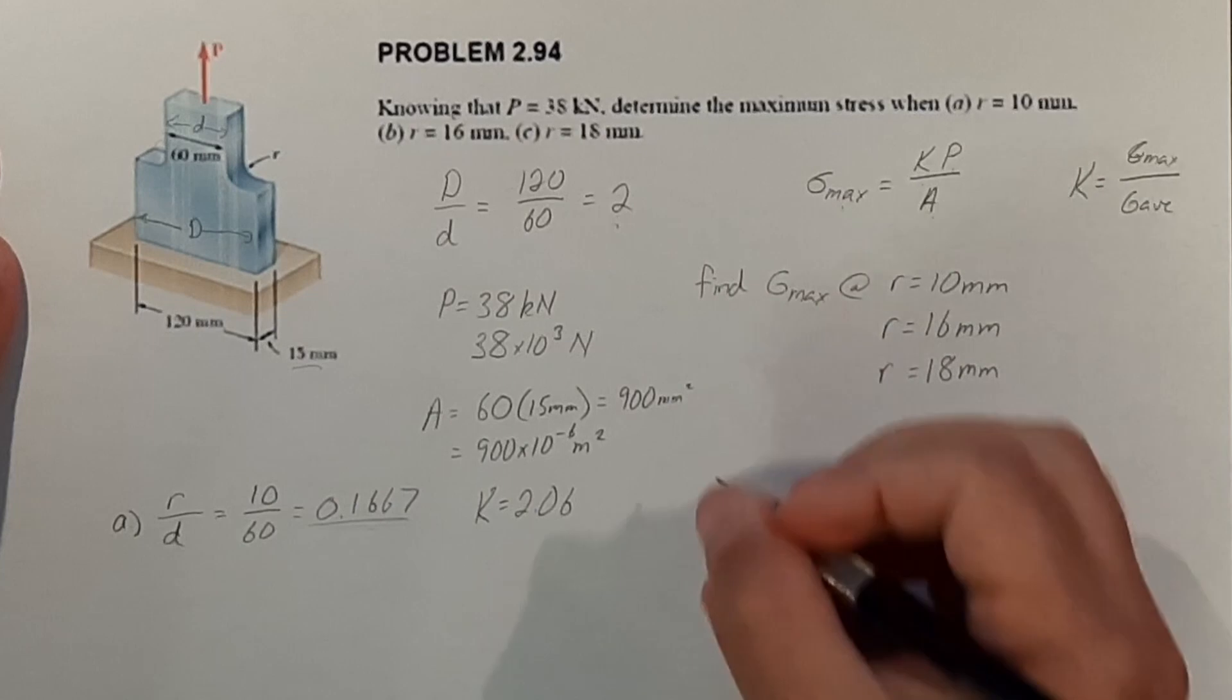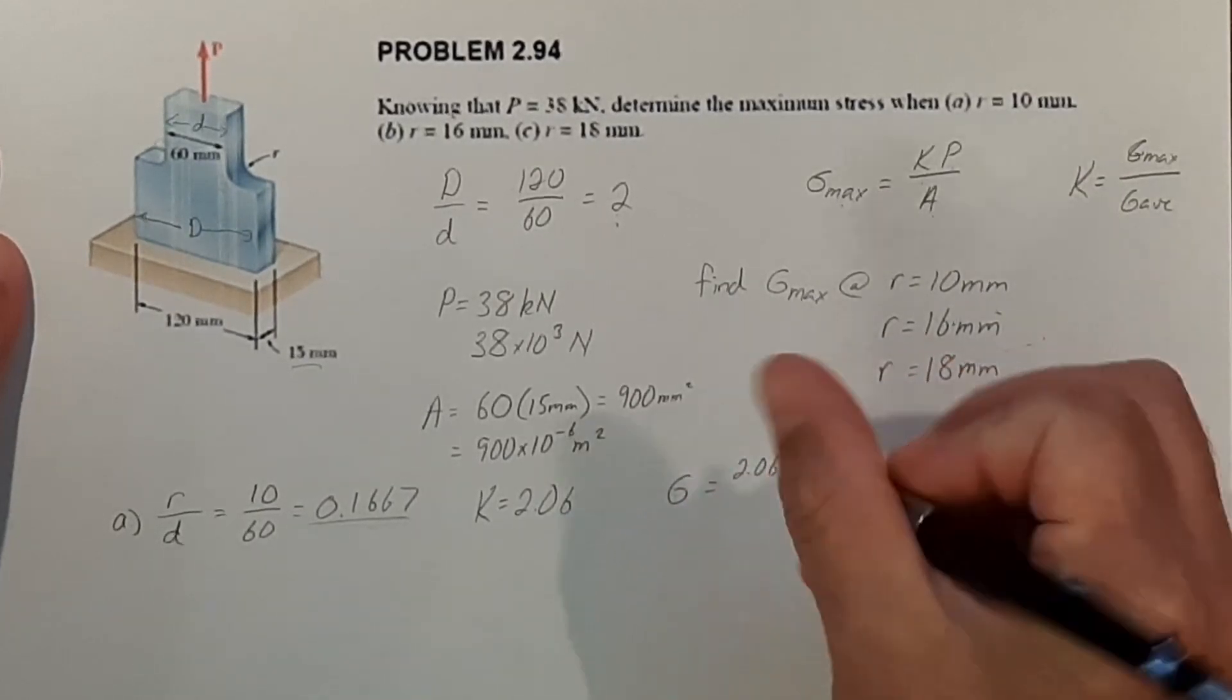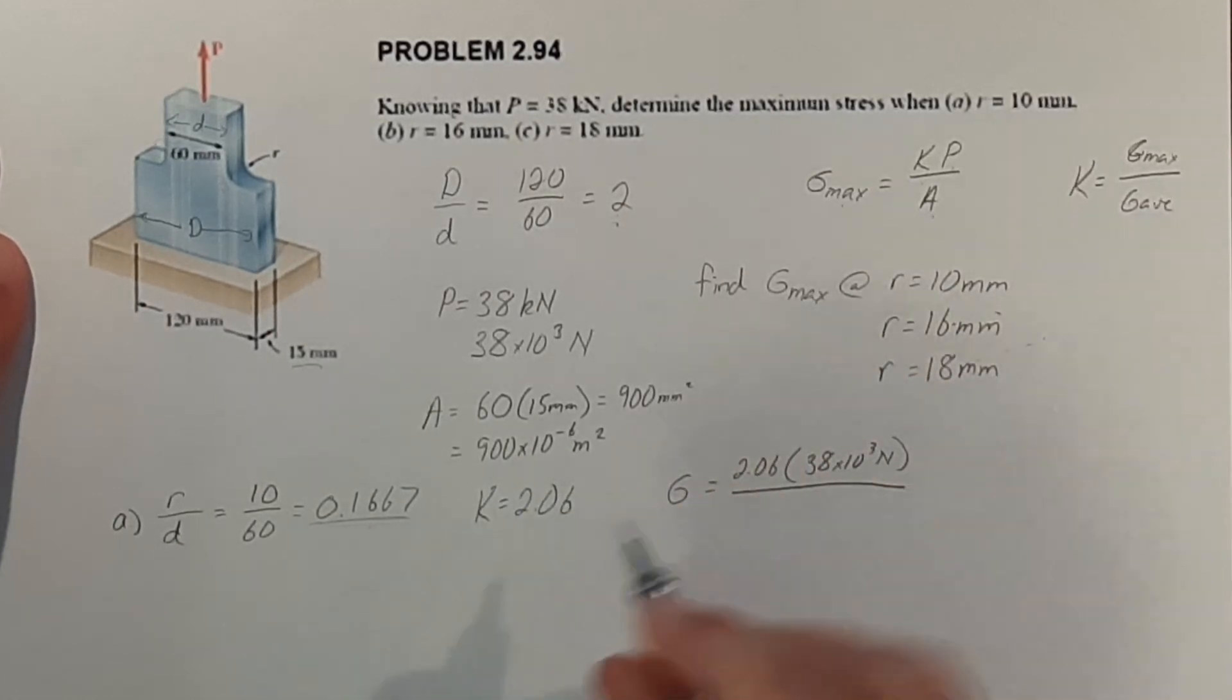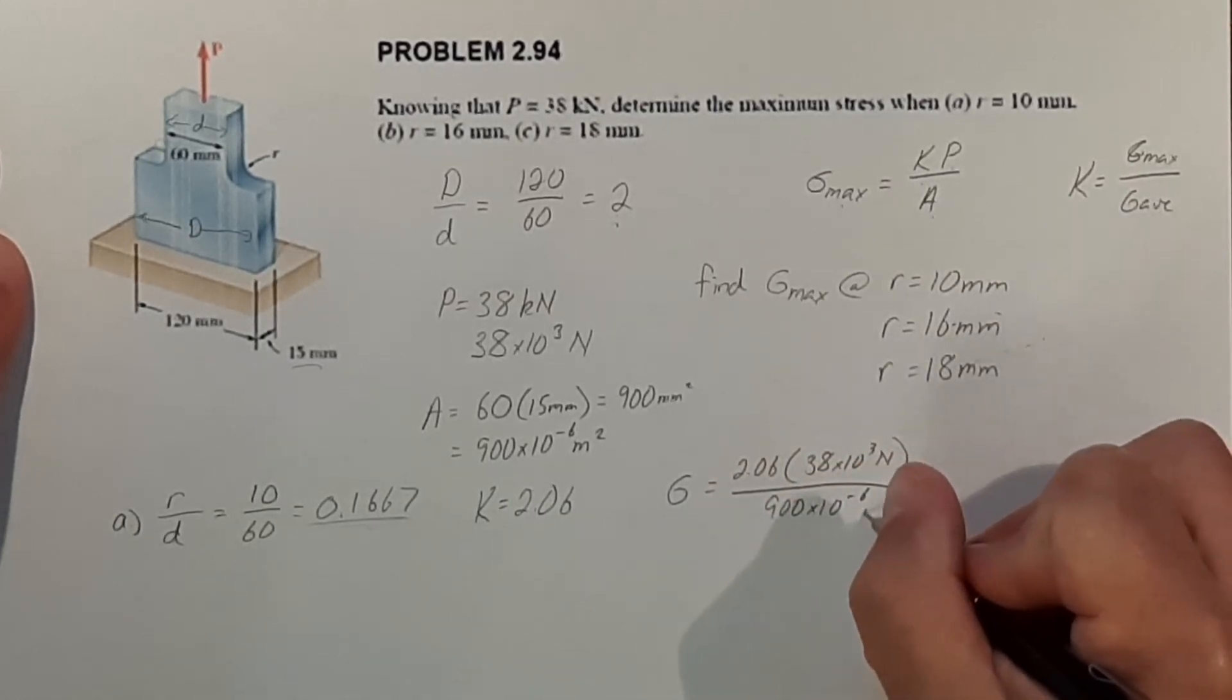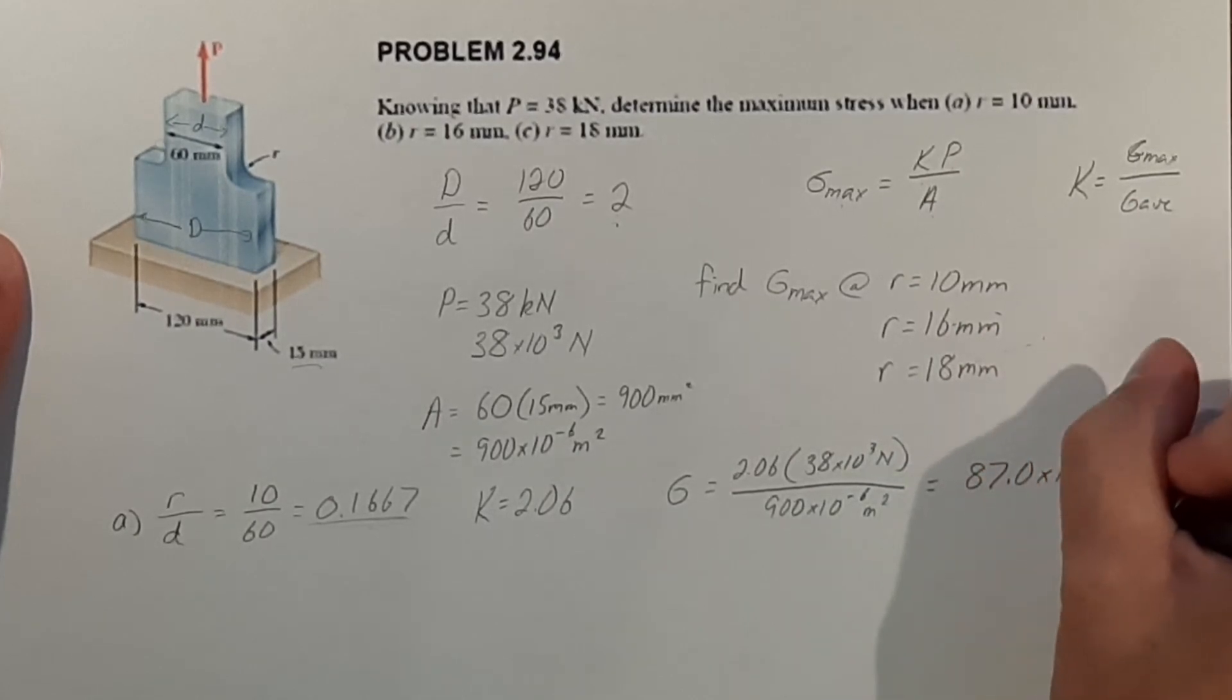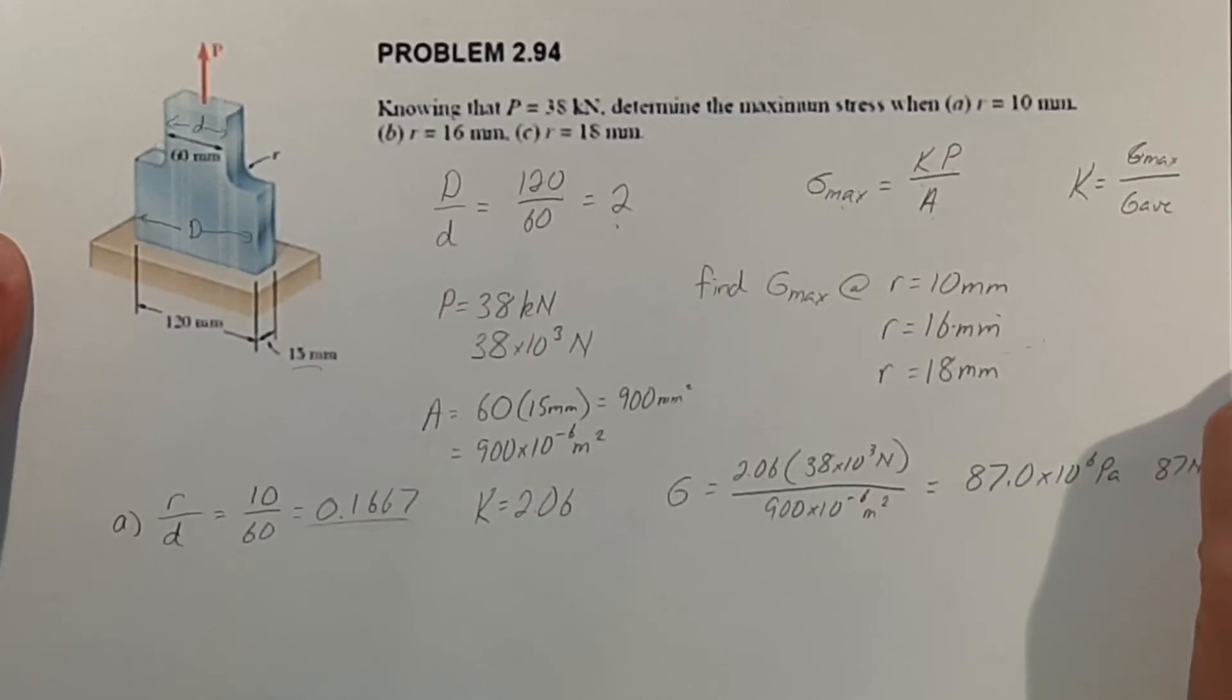And now that we have K, we can go ahead and figure out our max stress at 10 millimeters. It is equal to 2.06 times P, which we have here, 38 times 10 to the 3rd newtons, and all that is over our area of 900 times 10 to the negative 6 meters squared. And that gives us a total of 87.0 times 10 to the 6th pascals or 87 megapascals.